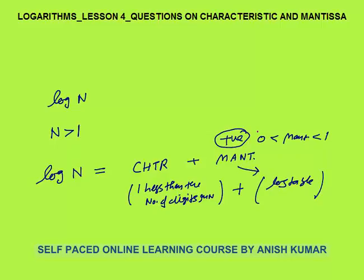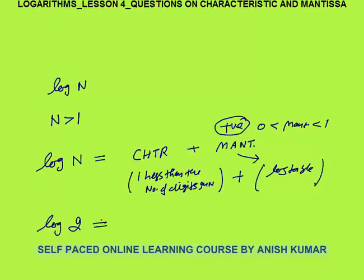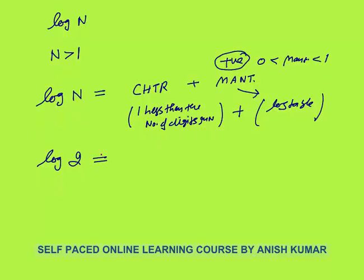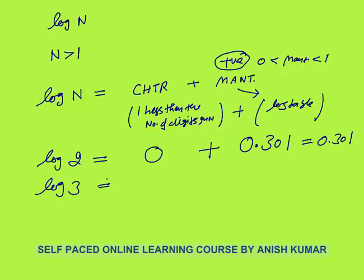For example, the value of log 2: the number 2 is a one-digit number, so characteristics = 1 − 1 = 0. From the log table, mantissa is 0.301. So the final answer: log 2 = 0.301. Similarly, log 3 is also a single-digit number, so characteristics = 0.